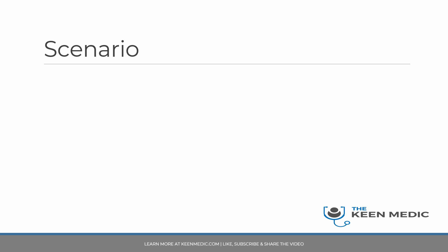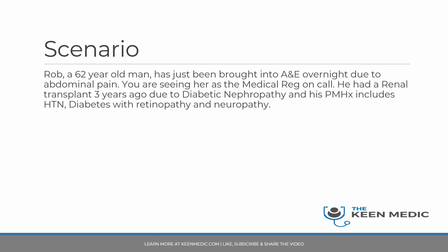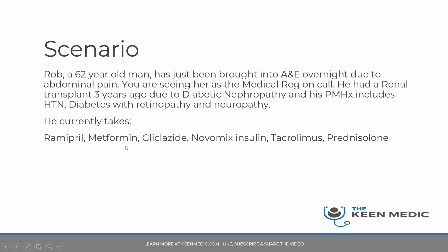Here's the scenario. Rob is a 62-year-old man who has just been brought into A&E overnight — you are the medical registrar on call. He's been brought in due to abdominal pain. He had a renal transplant three years ago due to diabetic nephropathy. His past medical history includes hypertension, diabetes with retinopathy and neuropathy. He is currently taking ramipril, metformin, gliclazide, and insulin for his type 2 diabetes.